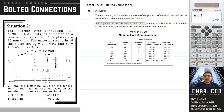In computing net area for tension and shear, the width of a bolt hole will be taken as 2 mm greater than the nominal dimension of the hole. So in getting the width of the bolt hole, we add another 2 mm on the nominal dimension. Based on the problem, the bolt diameter is M24. The corresponding standard hole dimension is 27 mm — we use the standard hole size since the type is not indicated in the problem. Therefore, the nominal hole is 27 mm and we can now compute the net area.